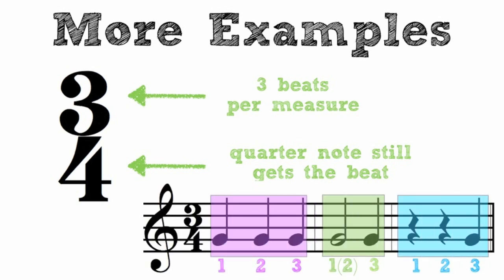Some examples of 3-4 measures would be these three. The first measure we have three quarter notes, one beat apiece. The second measure we have a half note followed by a quarter note which would equal three beats and in the last measure we have two rests followed by a quarter note. Two quarter rests equals two beats plus the quarter note equals a third beat.